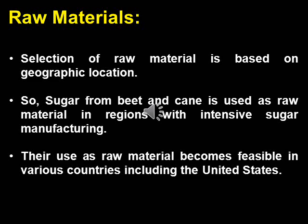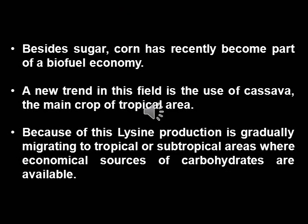Cultivation of starchy crops such as cane and beet is economic as well as feasible, and their use as raw material is viable in various countries including the United States, where cane sugar is frequently used for industrial applications. Besides sugar, corn has recently become part of a biofuel economy. A new trend is the use of cassava, which is the main crop of tropical areas, and because of this, lysine production is progressively migrating to tropical or subtropical areas where cheap sources of carbohydrates are available.